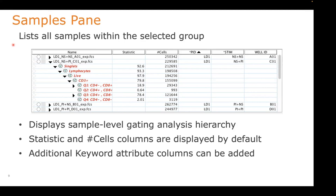In the sample pane of our FlowJo workspace, we see all the samples in the particular group you've selected. There are some default columns like name, statistic, and number of cells. You can add or display additional information in the workspace — these are keywords that already exist in the data files, and we're just displaying that information for each sample in the sample pane.